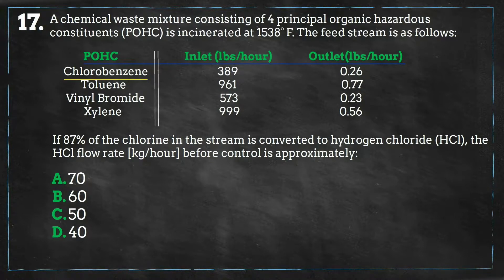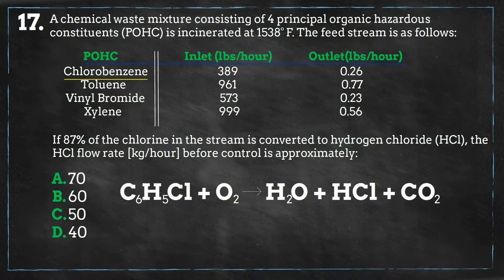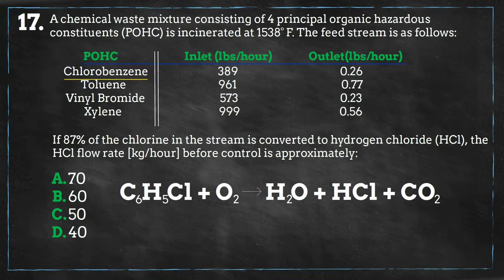To calculate the flow rate, we need to understand the stoichiometry of the combustion reaction, shown below. As we discussed during the chalkboard session, atmospheric oxygen is usually the oxidant during combustion, and for organic constituents there will result carbon dioxide, water, and other products depending on what is being combusted. So now we need to balance this equation to see how much hydrogen chloride is produced from chlorobenzene.